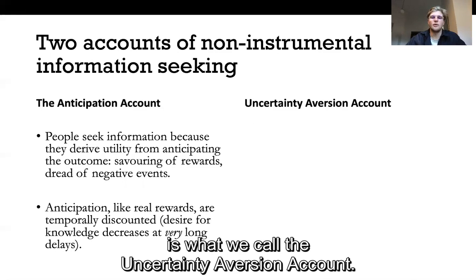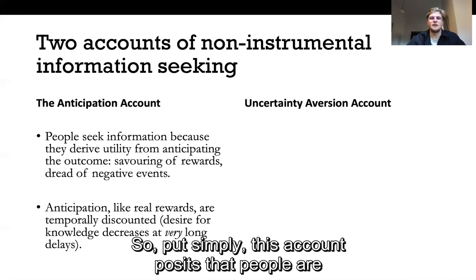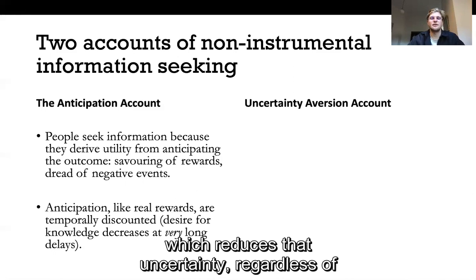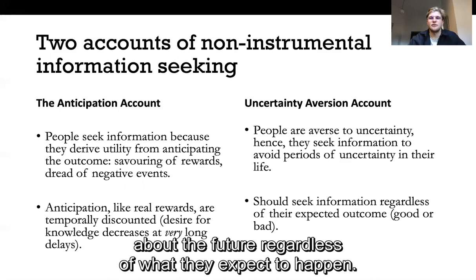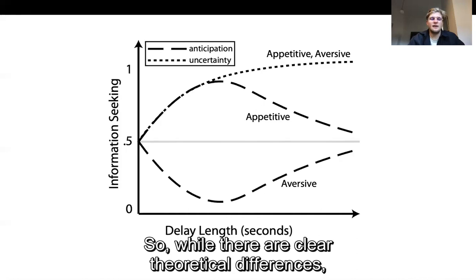The second explanation we're going to talk about today is what we've called the uncertainty aversion account. So put simply this account posits that people are averse to uncertainty. Therefore they'll seek information which reduces that uncertainty regardless of what they expect. So whether it's news about an upcoming holiday or news about a potential red light fine, people are going to seek information about the future regardless of what they expect to happen.